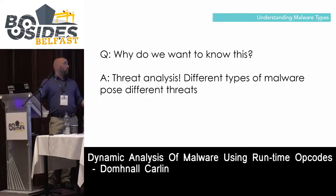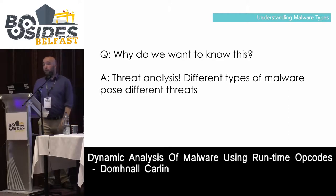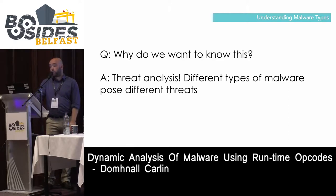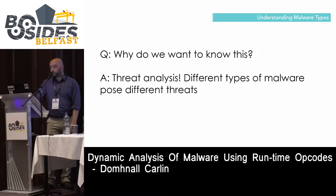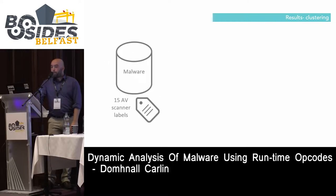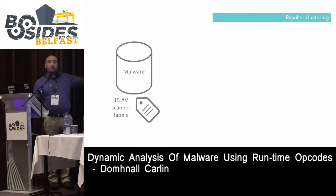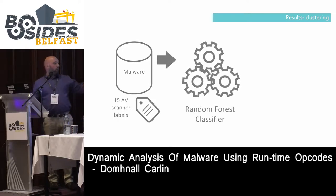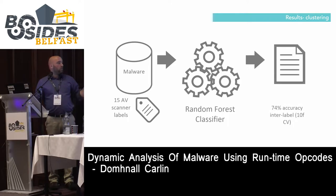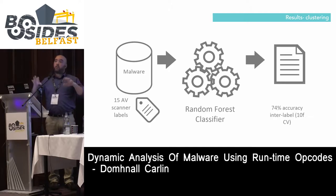We want to investigate intra-malware classification — malware versus malware — to tell the difference between different types of malware. Although benign software can be distinguished from malicious files at 99.98% accuracy, intraclass detection based on AV scanner labels was poor. The deep learning classifier was only 27% accurate — you'd be better off flipping its answer to get 73%. Random Forest gives 74% accuracy and SVM gives 62%.